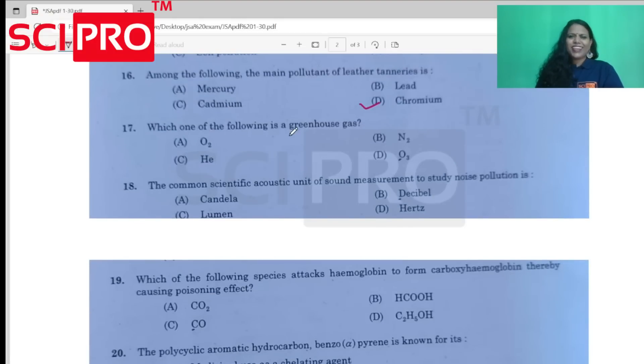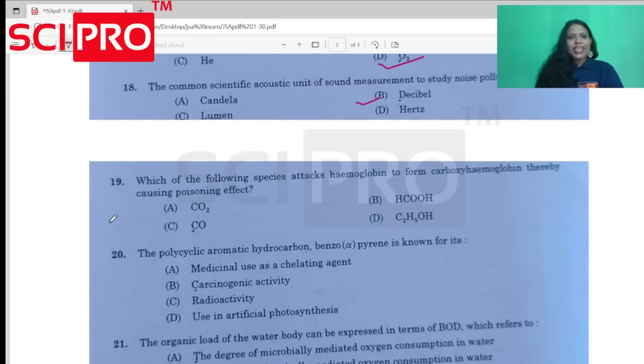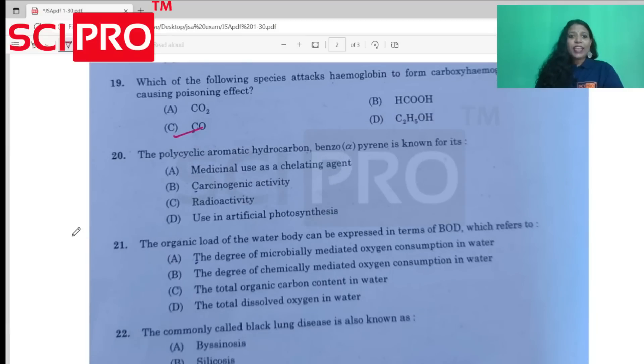Which one of the following is a greenhouse gas? Simple question. Question number 18: The common scientific acoustic unit of sound measurement to study noise pollution. Question number 19: Which of the following species attack hemoglobin to form carboxyhemoglobin? Carbon monoxide. Polycyclic aromatic hydrocarbon, benzopyrene, carcinogenic activity.